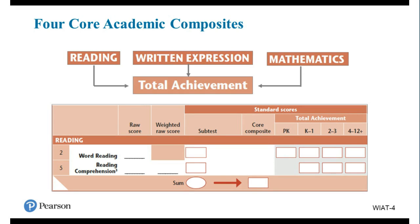Once you administer all the subtests appropriate for a child of a certain age, you'll combine those subtests to yield different composite scores. Just like on WIAT-3, you'll have a composite for reading, one for written expression, one for math, and then some combination of those will yield a total achievement composite. For your core academic composite for reading, there are two subtests: word reading and reading comprehension. You derive a raw score based on the examinee's performance, convert it to a subtest score, and you can see which subtests contribute to the total achievement composite at each grade level. Word reading contributes to total achievement at all grade levels, while reading comprehension starts at kindergarten.